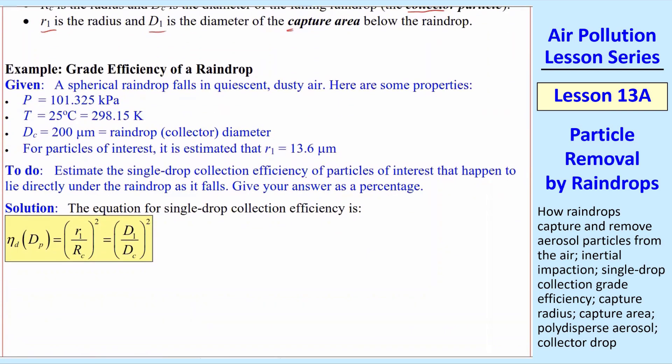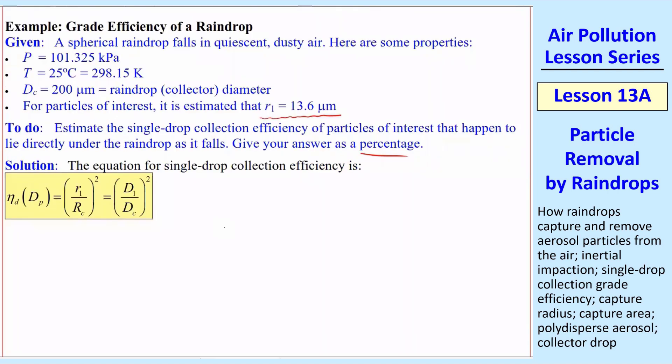Now let's do a simple example. So a spherical raindrop falls in quiescent dusty air. Here's some properties: pressure, temperature, diameter of the raindrop. And then for particles of interest, I'll just give it as for certain particles, it's 13.6 microns. Let's estimate the single drop collection efficiency for these particles of interest that happen to be directly under the raindrop as the raindrop falls as a percentage. So we'll just use that equation we just derived. I'll do the diameters. So the diameter is the radius times 2, and that's in microns. And then DC was given as 200 microns. That's squared. Microns cancel. And then to get it in percent, we multiply by 100%, and I get 1.85% as my answer.